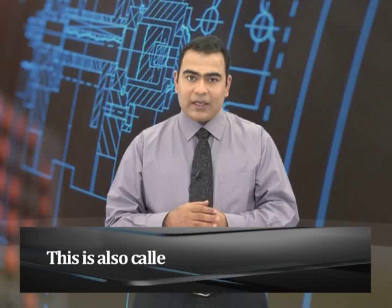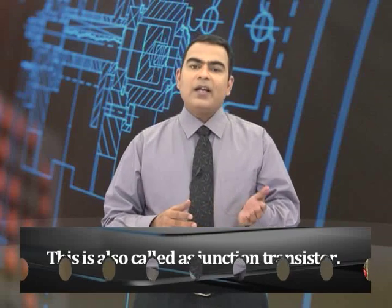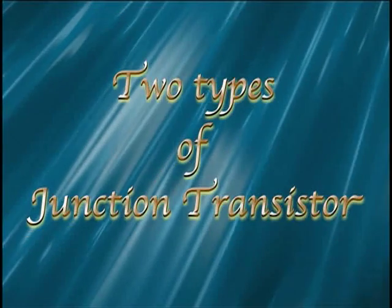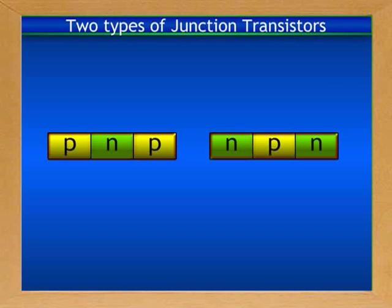A transistor consists of two p-n junctions formed by sandwiching either a p-type semiconductor or an n-type semiconductor between a pair of opposite semiconductors. This is also called a junction transistor. There are two types of junction transistors: the PNP transistor and the NPN transistor.